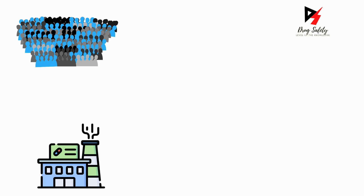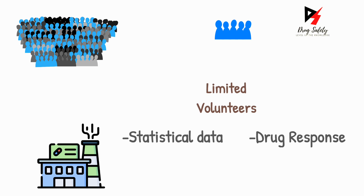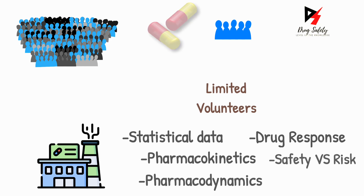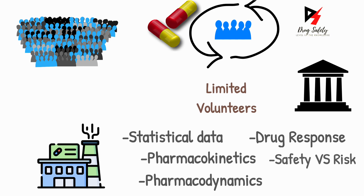Due to all these challenges, the clinical trial sponsor has no choice but to conduct the clinical trials on that limited population of patients who willingly enrolled into the trials. Based on statistical data — drug response, pharmacokinetics, pharmacodynamics, drug safety and risk ratio, and other parameters — derived from testing a new drug on this limited population of clinical trial participants, the regulatory authorities perform the analysis of all these data and grant marketing authorization of that new drug to the sponsor pharmaceutical company.